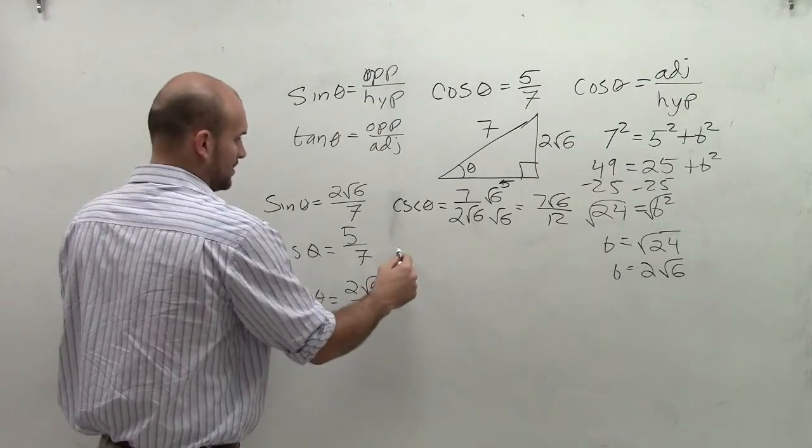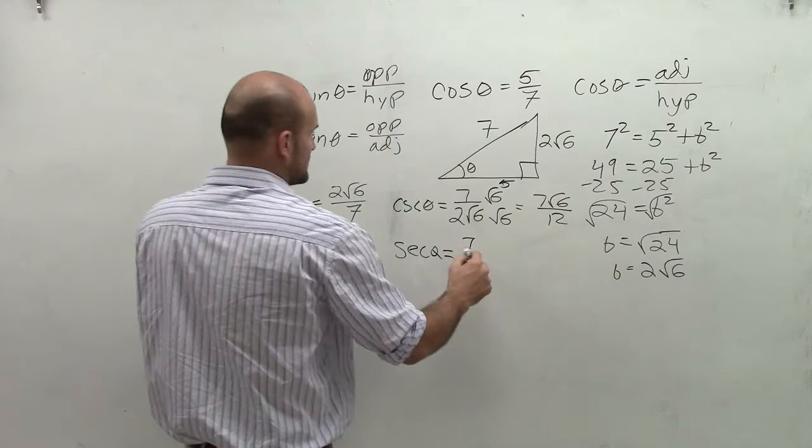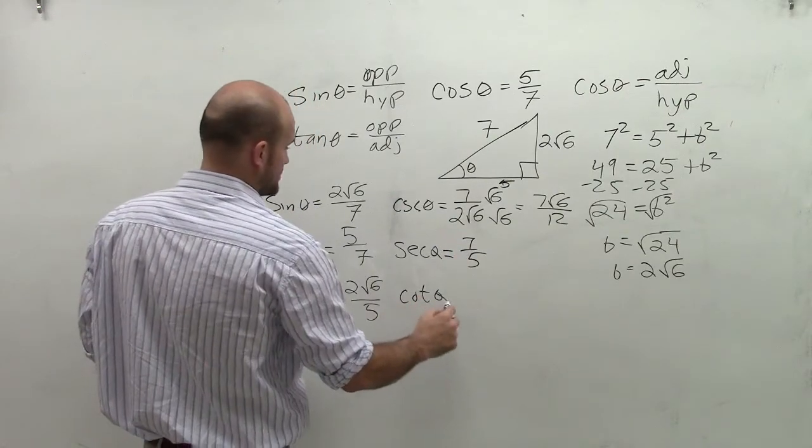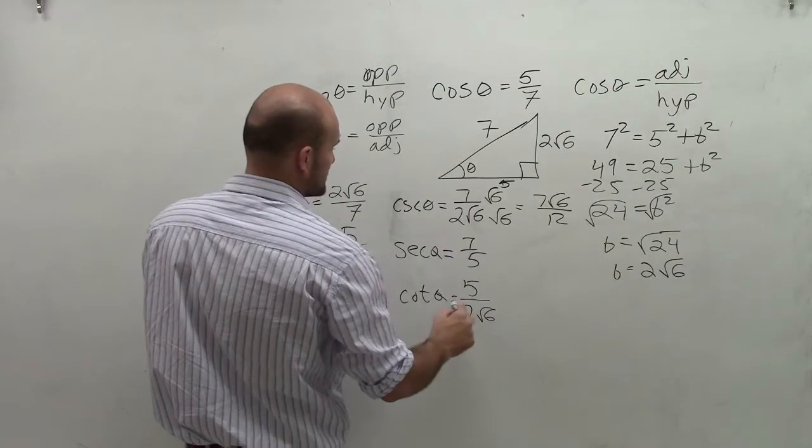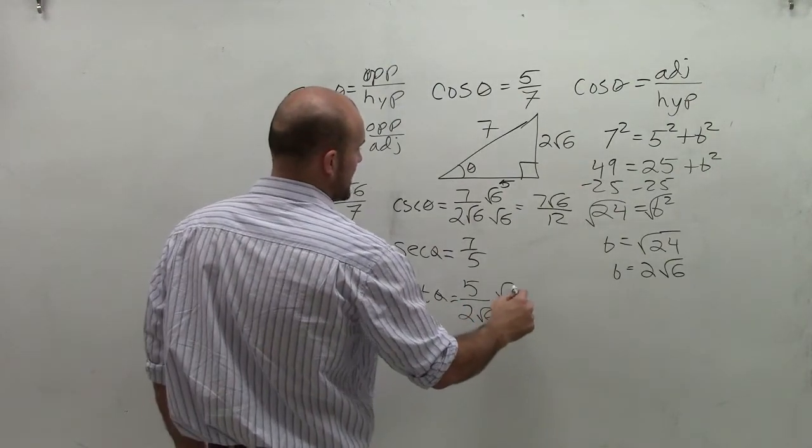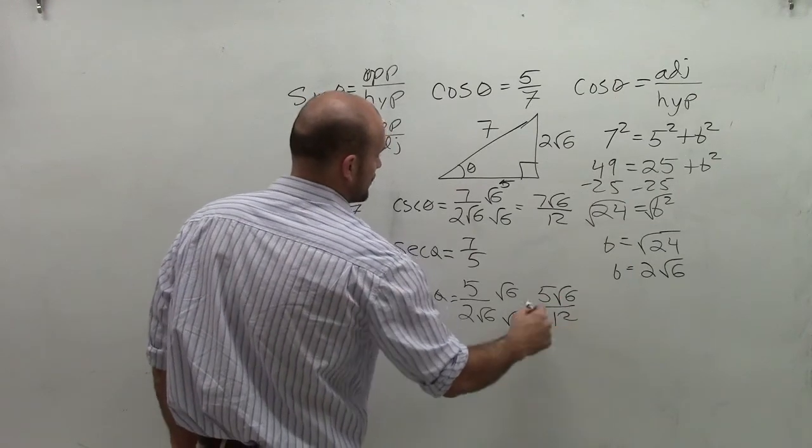To find the reciprocal of cosine, that's the secant of theta, which is going to be 7 over 5. And the cotangent of theta is going to be 5 over 2 radical 6. Again, rationalize the denominator. And you get 5 radical 6 over 12.